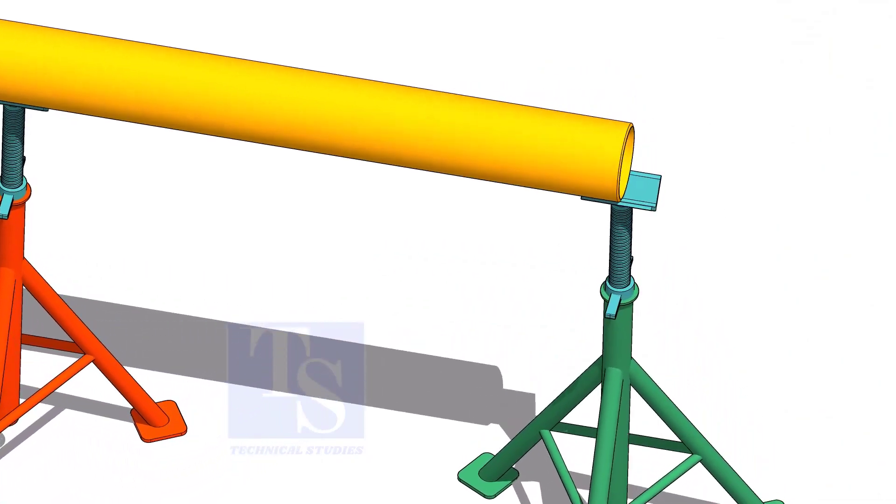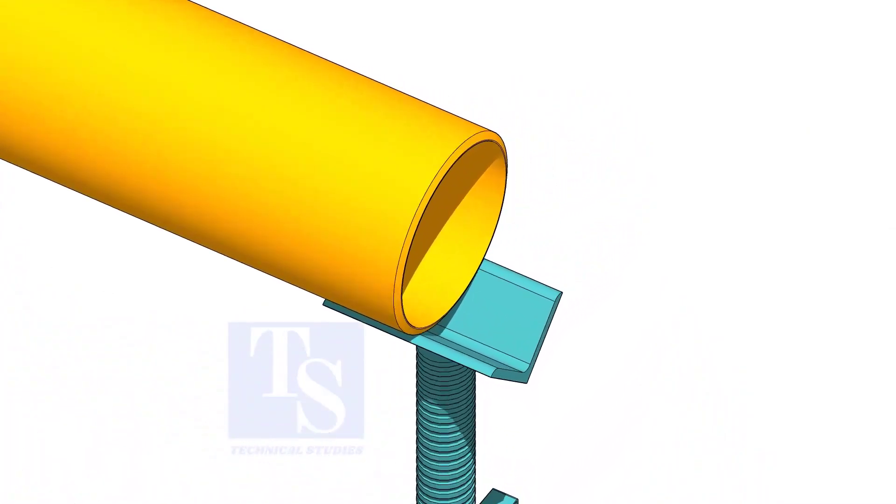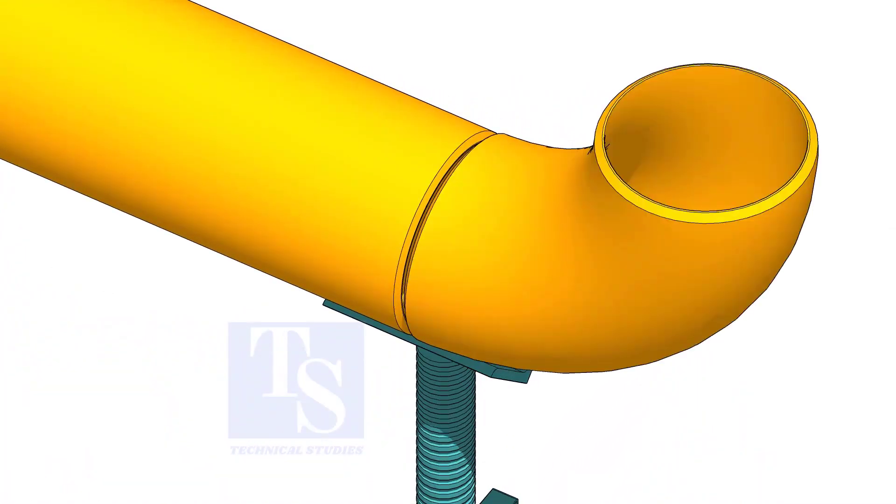Put the pipe on stands and level it. Put the elbow and the gap rod. Correct the overlap and tack weld on both sides.